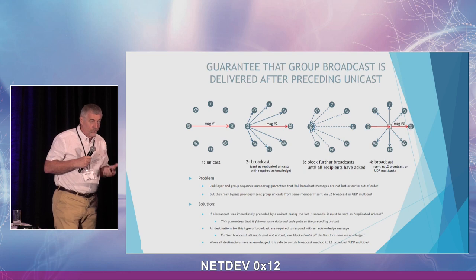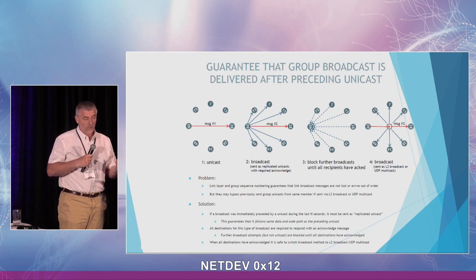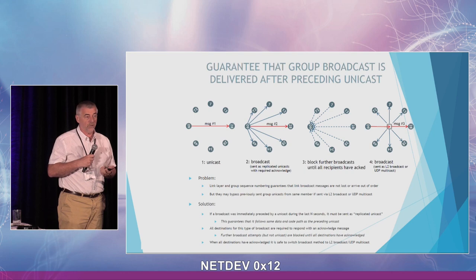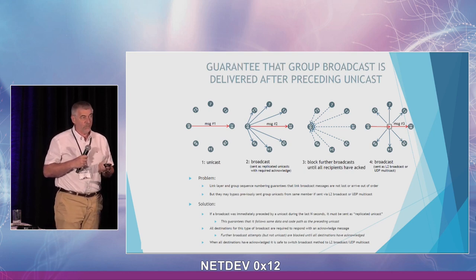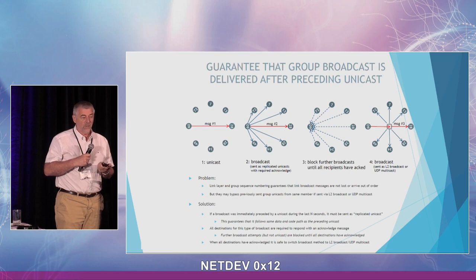A trickier problem: what if I first send a unicast and then send a broadcast? How do I guarantee the broadcast is delivered to a particular socket after the unicast? The trick is to leverage the replicated broadcast method. The sender socket tracks what type of message was sent previously. When a broadcast follows a unicast, the sender sends that broadcast as a replicated unicast, so message 2 follows the same data path as the unicast, eliminating any risk of reordering.